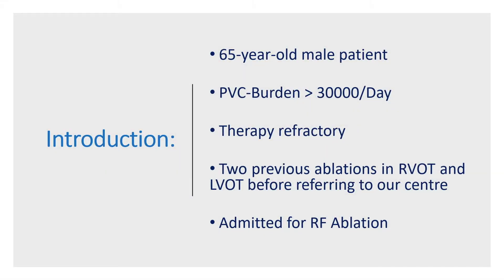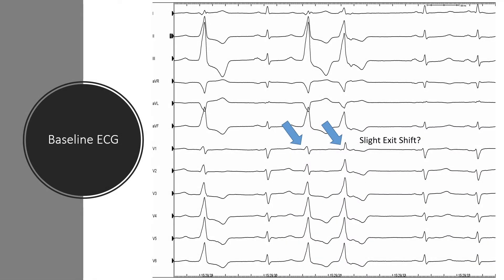The second patient is a 65-year-old man with a high PVC burden who had two previous ablations in RVOT and LVOT before referring to our center for a third catheter ablation procedure. In this patient, we will see the importance of detailed ECG analysis and the value of having different access during catheter ablation of PVC. In the baseline ECG, we actually see two dominant morphologies. The first one is more compatible with an exit in the coronary cusp — we see the fat R wave. The second one has a right bundle branch block morphology, which is more compatible with an exit at aortomitral continuity and below the coronary cusp.